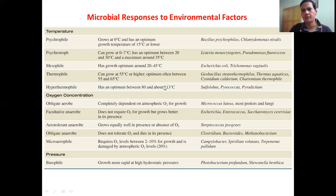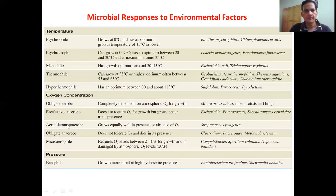Depending on oxygen requirements, microorganisms fall into five categories: obligate aerobes require atmospheric oxygen for growth; facultative anaerobes do not require oxygen but grow better with it and can survive without it; aerotolerant anaerobes grow equally well with or without oxygen; obligate anaerobes do not need oxygen and die if exposed to it; microaerophiles require oxygen levels of 2–10% for growth and are damaged above 30%.